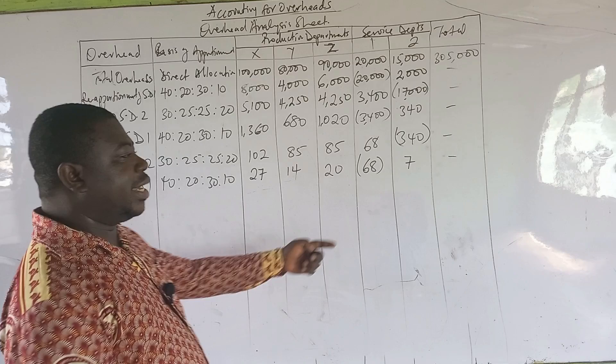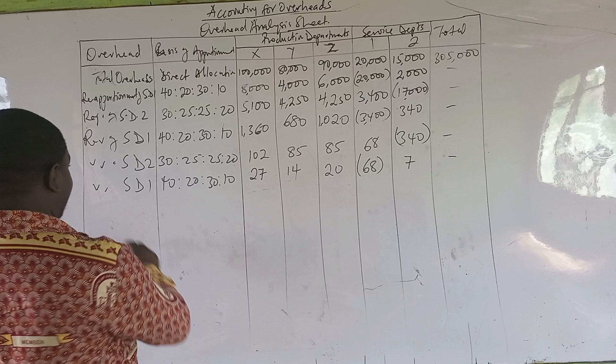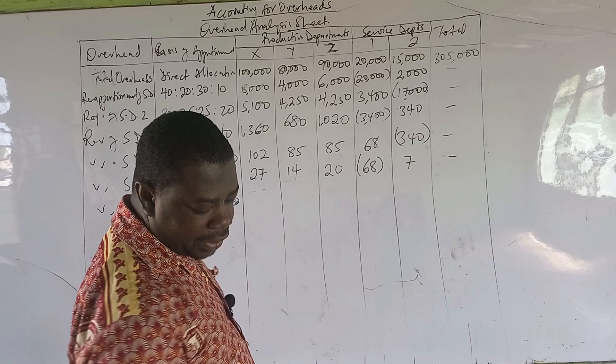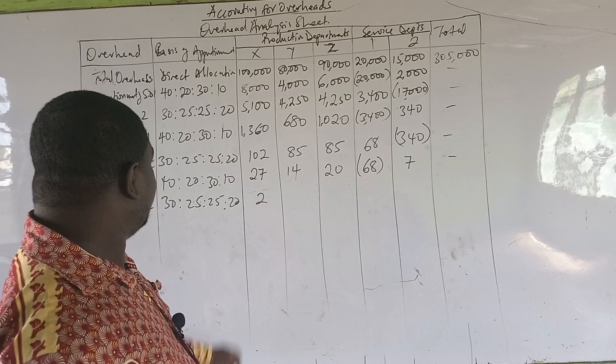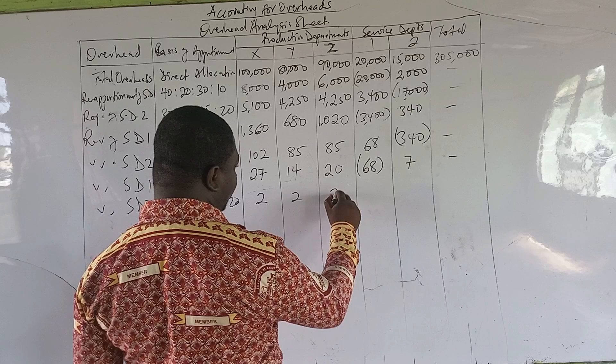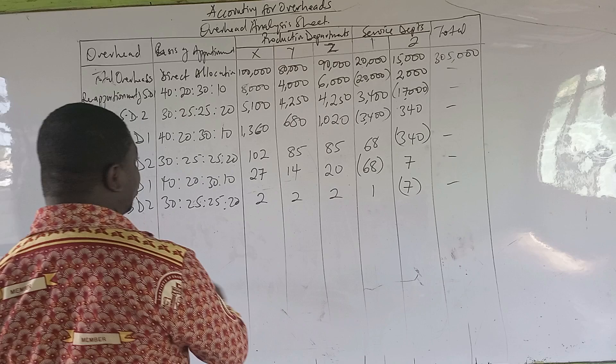Most of the time when it falls below 10, we don't reapportion — we usually ignore amounts that small. But let's do the last line. Reapportionment of service department 2 with ratio 30 is to 25 is to 25 is to 20 applied to 7. That gives roughly 2, 2, 2 for X, Y, Z, and 1 for department 1. If you were to share that 1, it would be decimals, so this is where you can end it and find your totals.